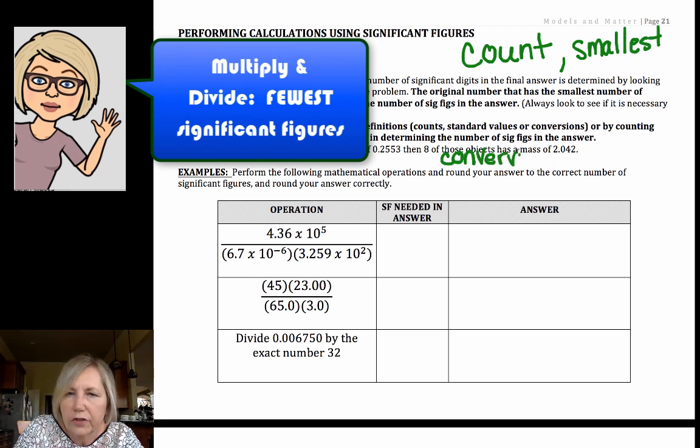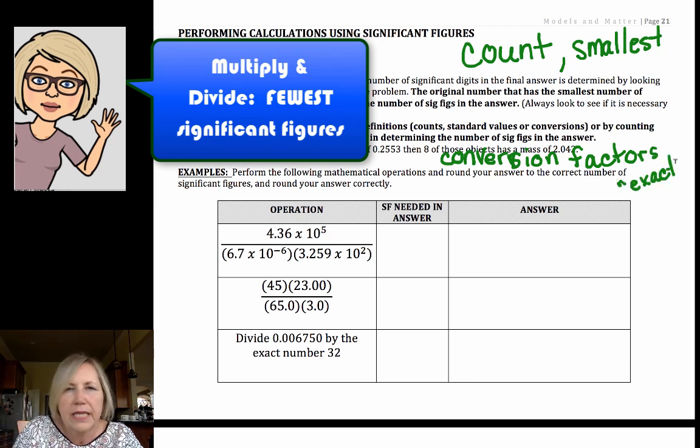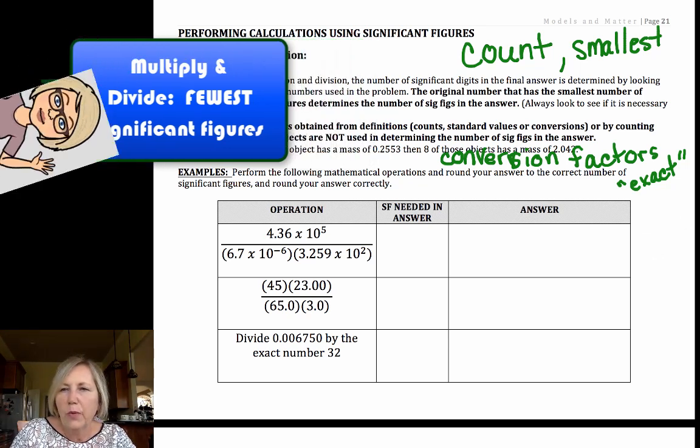To simplify, we are also not going to include conversion factors. When converting units, we are going to assume that those are exact. Sometimes they are, sometimes they're not. So to simplify at an introductory level, we are going to assume that conversions between kilometers and miles are exact values.